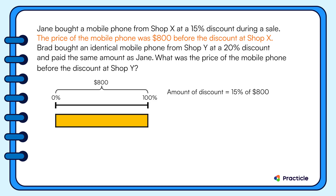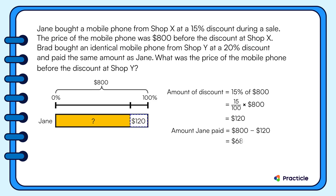What is 15% of $800? Let's calculate that by writing 15% as a fraction and then multiplying it by its original price of $800. Did you get $120? Now that we know Jane got a discount of $120, we can find the actual amount that she paid for the phone. When we subtract this discount from the original price, we get $680.